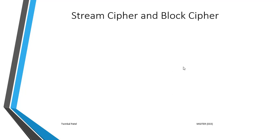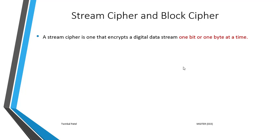First of all we will start with stream cipher and block cipher. A stream cipher is a cipher that encrypts digital data one bit or one byte at a time. Examples are Vigenère cipher and Vernam cipher, as we have studied in earlier lectures. So stream cipher encrypts data bit by bit or one byte at a time.